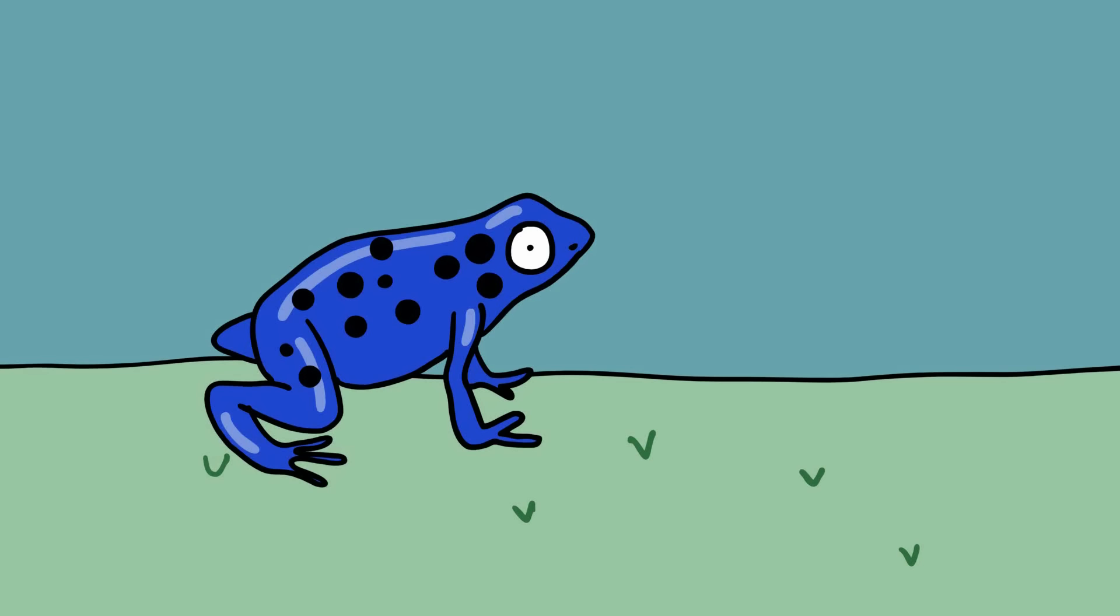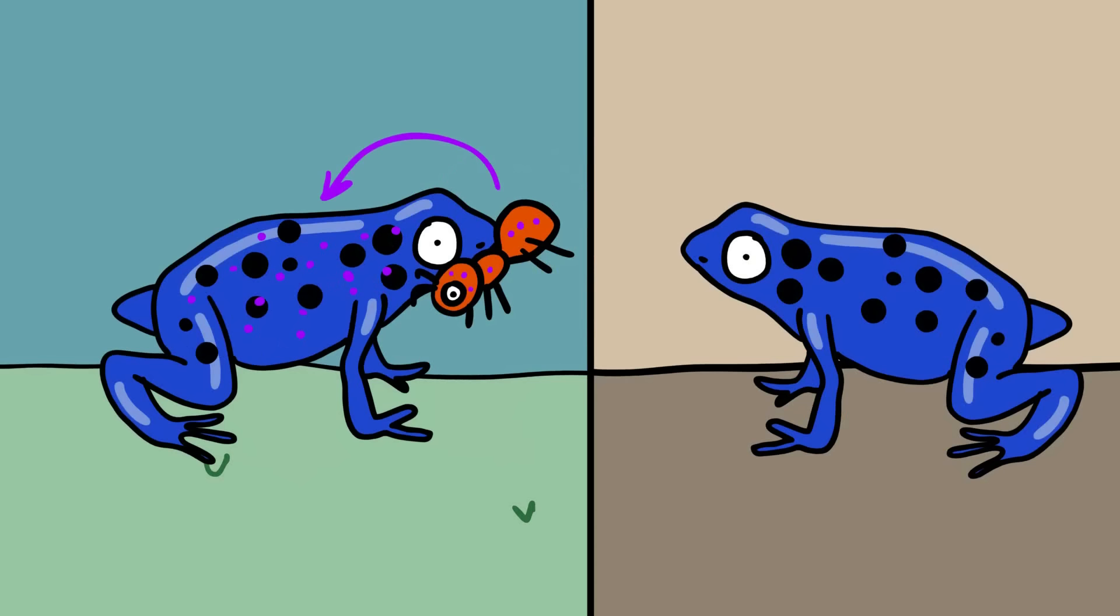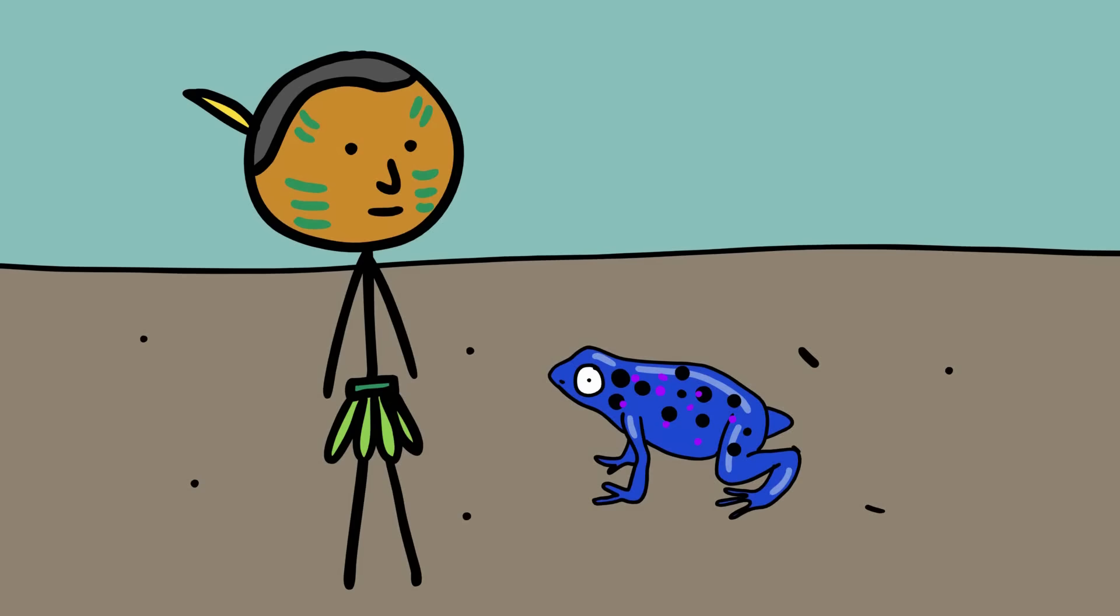These frogs don't manufacture their own venom, but collect it from the ants, mites, and other insects that constitute their diet, as evidenced by the fact that poison dart frogs kept in captivity and fed other types of food are much less dangerous. The dart part of this amphibian's name derives from the fact that indigenous tribes across South America dip their hunting darts in its venom.